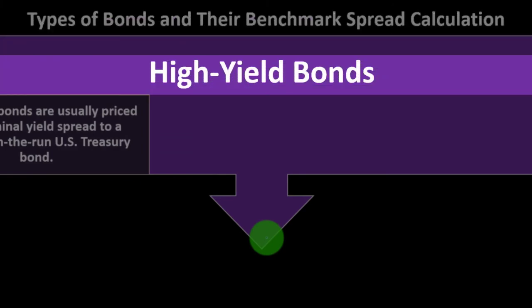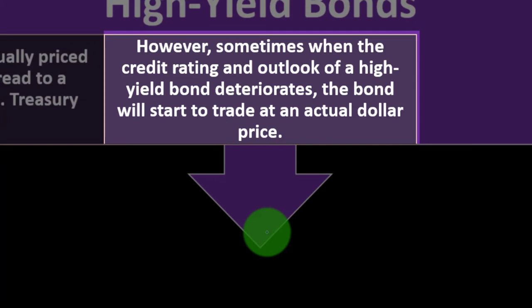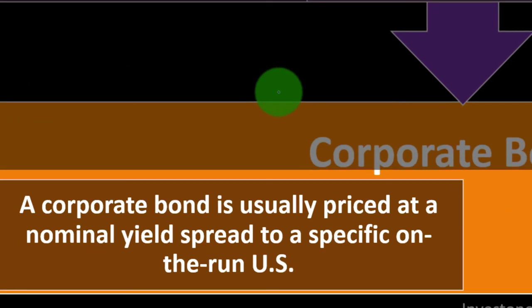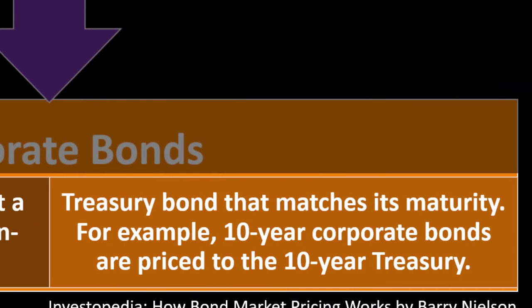Now, types of bonds and their benchmark spread calculations. High yield bonds — the junk bonds — are usually priced at a nominal yield spread to a specific on-the-run U.S. Treasury bond. However, sometimes when the credit rating and outlook of a high yield bond deteriorates, the bond will start to trade at an actual dollar price — for example, trading at $75.875 as opposed to 500 basis points over the 10-year Treasury. Corporate bonds are usually priced at a nominal yield spread to a specific on-the-run U.S. Treasury bond that matches their maturity — for example, 10-year corporate bonds are priced to the 10-year Treasury.